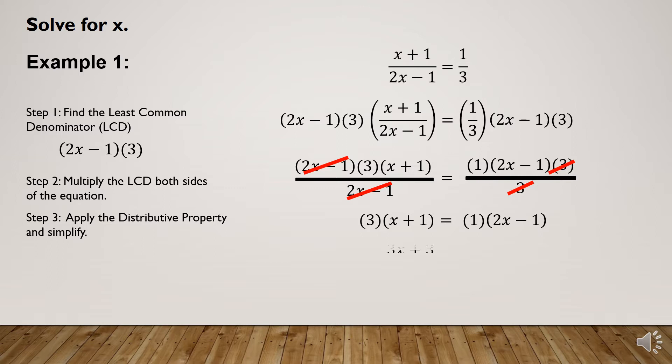So 3 times (x + 1) gives us 3x + 3, and 1 times (2x - 1) gives us 2x - 1.